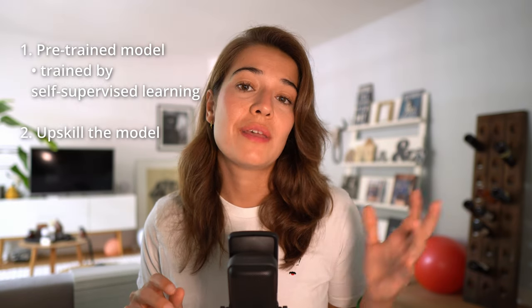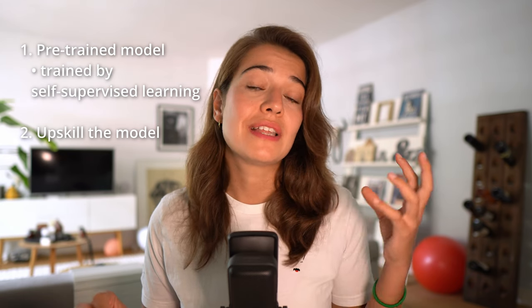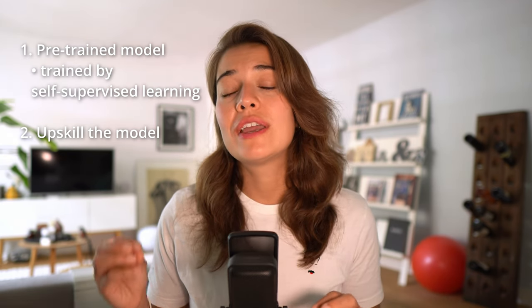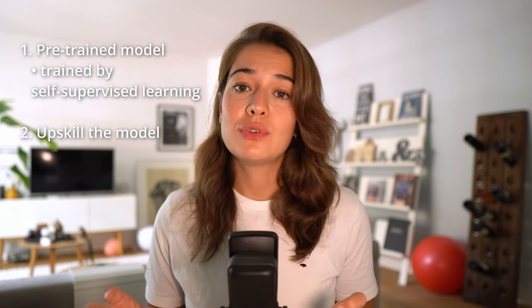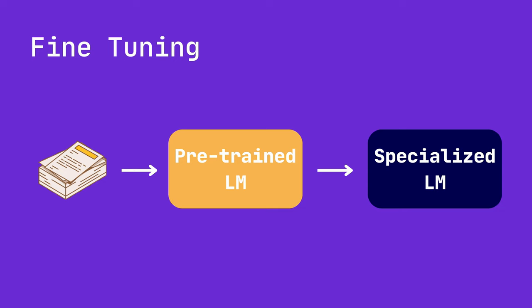But a pre-trained model cannot yet be used for advanced use cases. The next step is to further upscale a pre-trained model for a very specific task, or to refine and adapt this non-specialized knowledge for a specialized domain. The way to do that is through a process called fine-tuning, which involves further training the pre-trained model on a smaller task-specific labeled dataset using supervised learning.